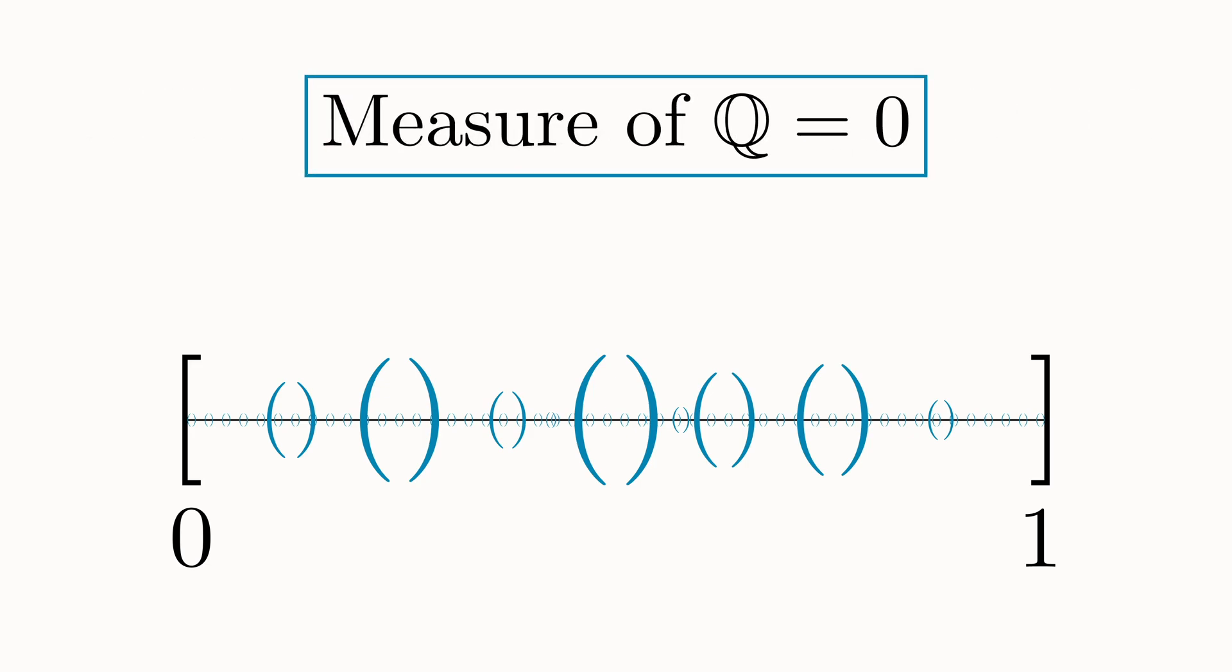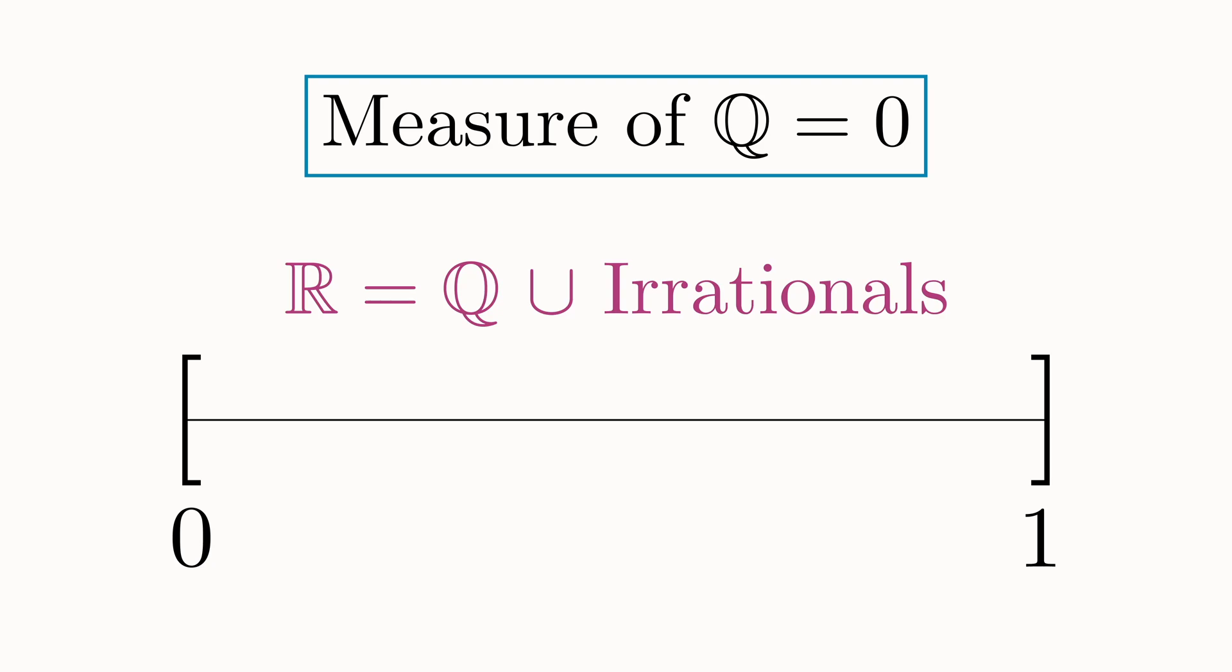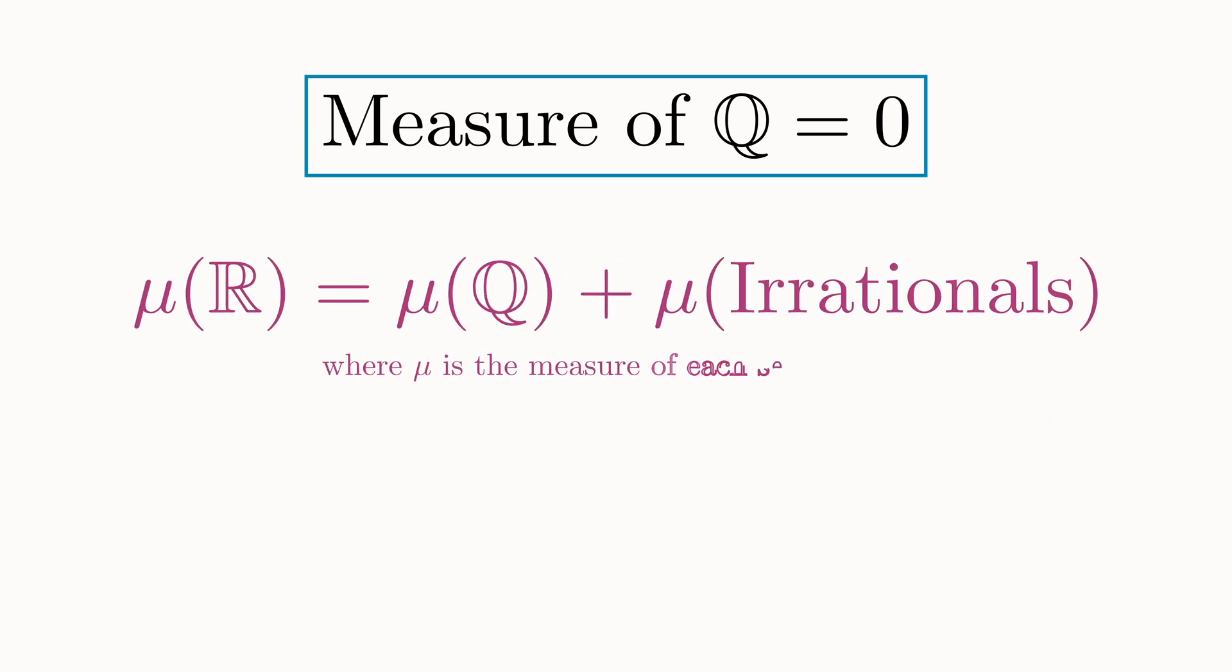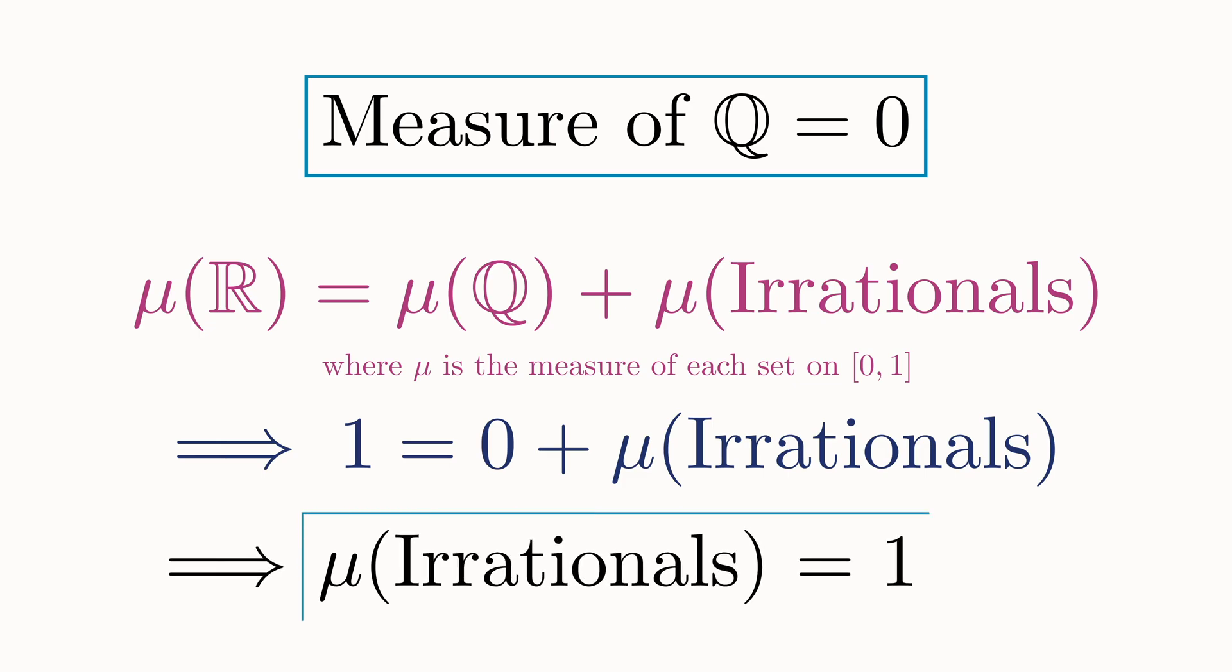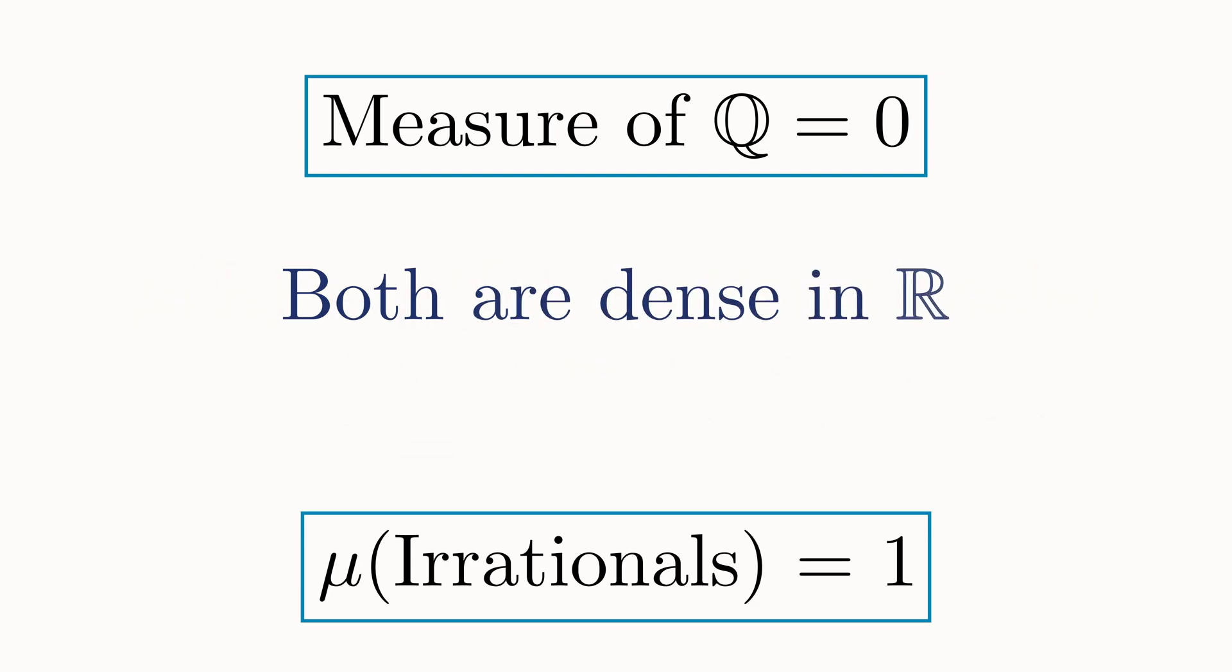This in itself is quite an interesting result. And in fact, it directly leads to one more. The set of real numbers between 0 and 1 is equal to the union of the set of rational numbers and the set of irrational numbers in the same interval. Now since the entire interval has a measure of 1, and the rational numbers have a measure of 0, by the countable additivity property, which remember is just part of the definition of a measure, the irrational numbers in this interval must have a measure equal to 1. So although the rationals and the irrationals are both dense in the reals, the rational numbers somehow make up 0% of the real number line. Think about that for a moment.